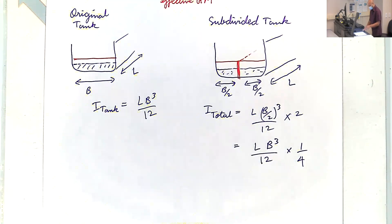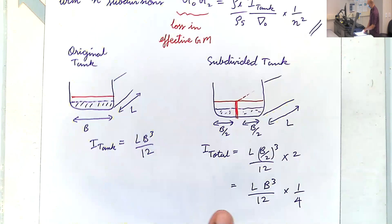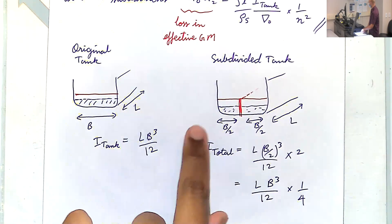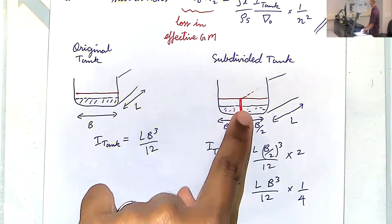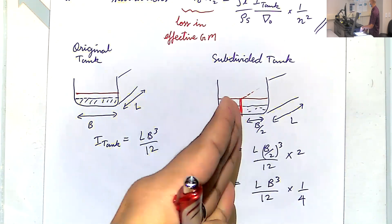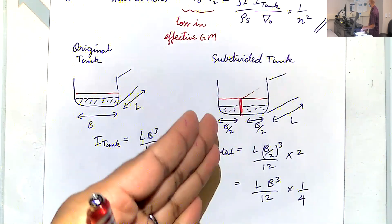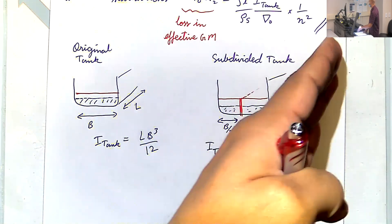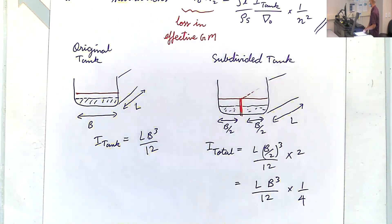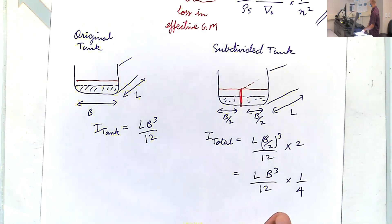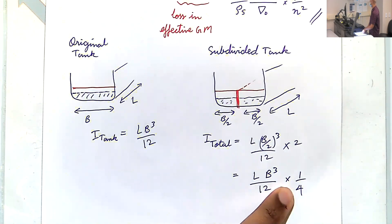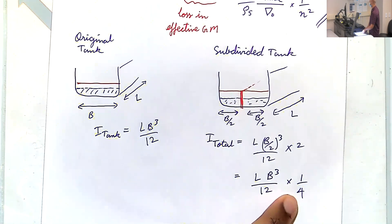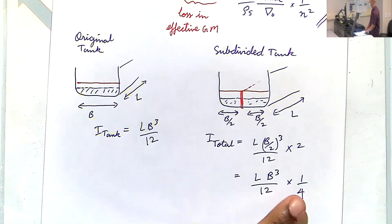Just by partitioning the tank using a plate running along the hull, you've dropped the loss by four times.